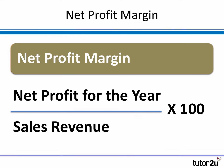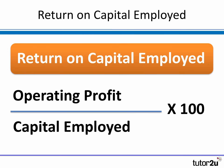Moving further down the income statement towards the bottom, we come to what's known as the net profit, or sometimes the profit for the year. It's a similar calculation to the previous two — we take the net profit for the year, divide it by the sales revenue for the same period, and multiply by 100 to get our net profit margin. The fourth profitability ratio is slightly different. Here we're not looking at sales revenue; we're trying to compare the profit earned with the amount invested in the business. So we take the operating profit and divide it by capital employed — from the balance sheet — then multiply by 100 to get our return on capital employed, or ROCE.